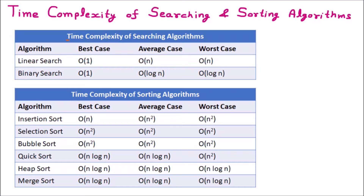So if the time complexity of any algorithm is better — better means less — then we say that algorithm is a better one. So first we are going to start with the time complexity of the searching algorithm. Here in the first table we can see the time complexity of the searching algorithm. Whenever there are some elements given to us and we are searching them, this is called the searching algorithm. Let's suppose we are having elements like 7, 6, 5, 2, 9, and 22 — these are unsorted elements — and that's why we can apply linear search here.